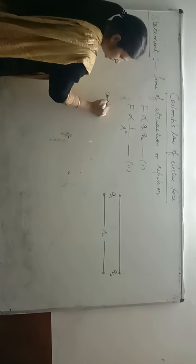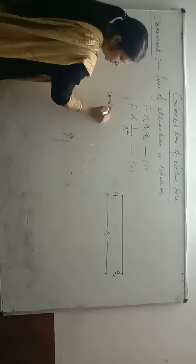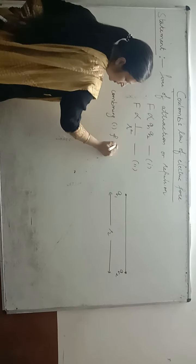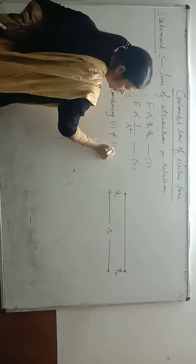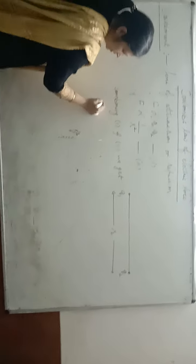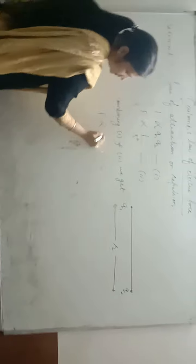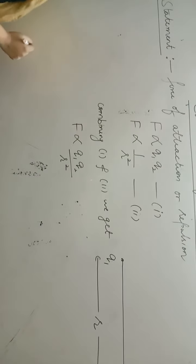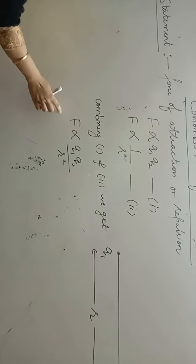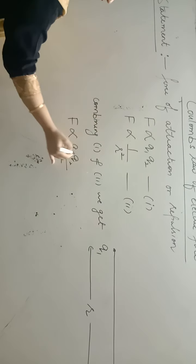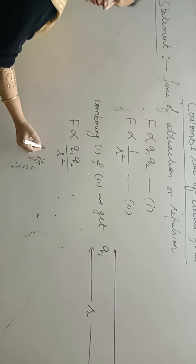Combining both relations, F is directly proportional to Q1 Q2 upon R square. Removing the proportionality sign and introducing a constant K, we get F is equal to K Q1 Q2 upon R square.